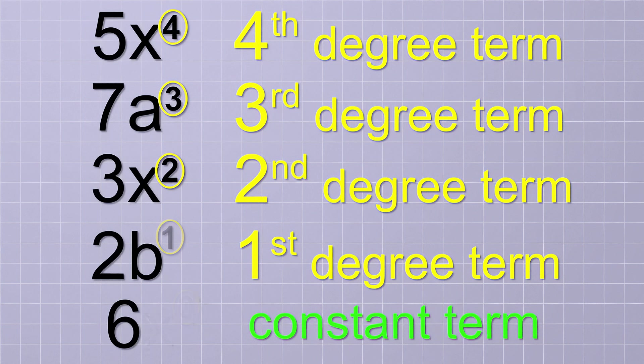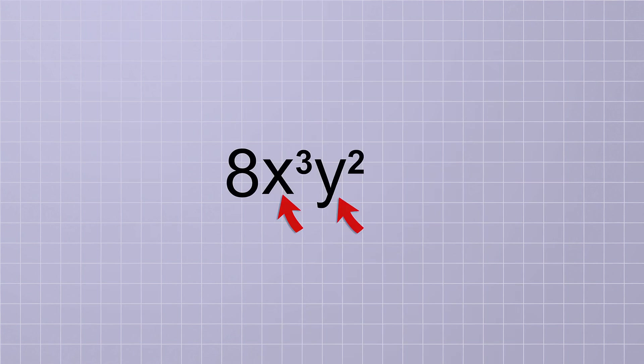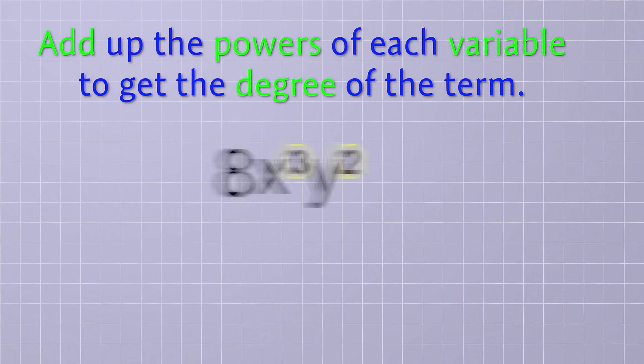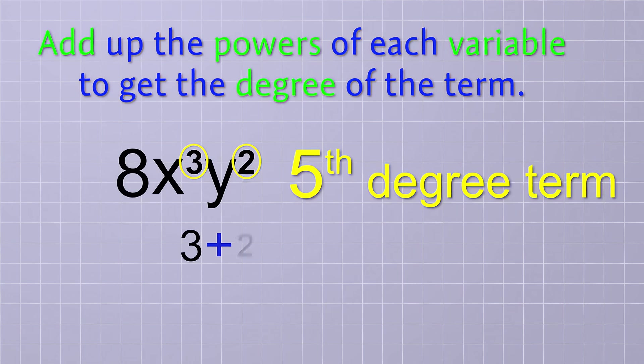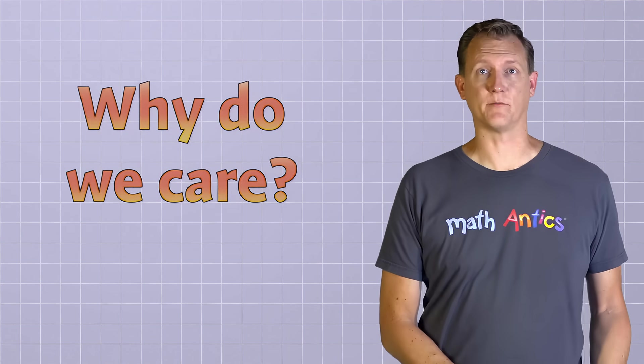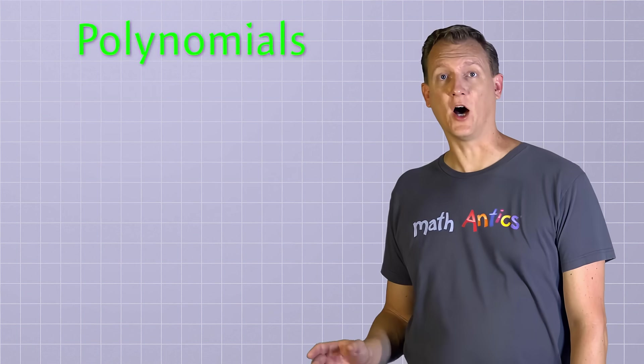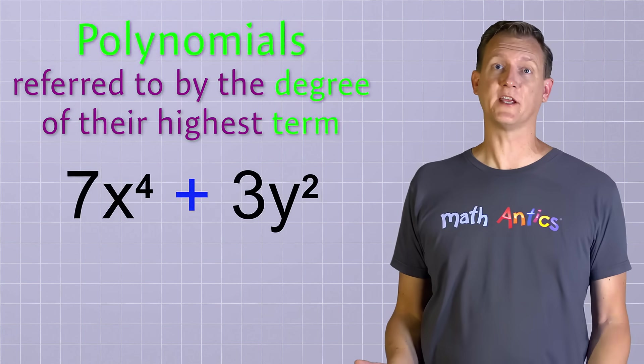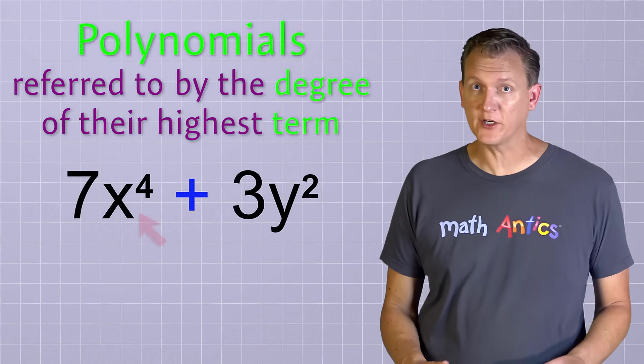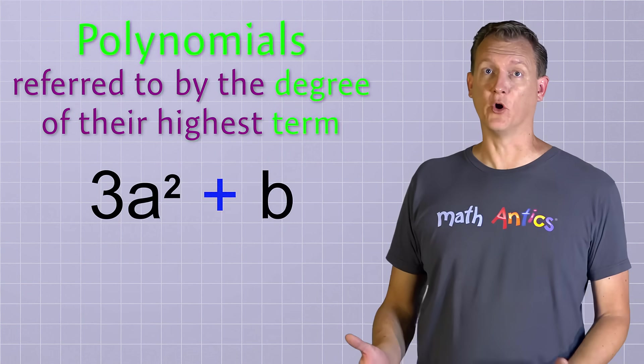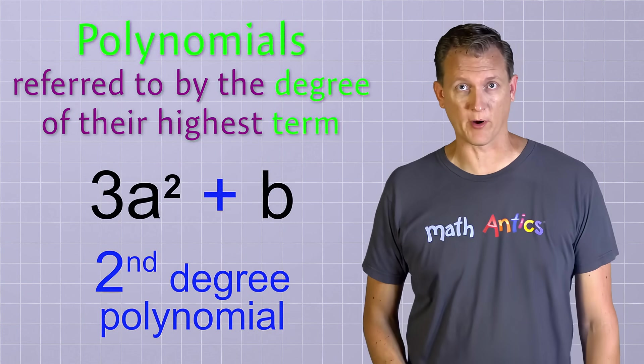Things are a little more complicated when you have terms with more than one variable. In that case, you add up the powers of each variable to get the degree of the term. Since the powers in this term are 3 and 2, it's a 5th degree term because 3 plus 2 equals 5. Ok, but why do we care about the degree of terms? Well, it's because polynomials are often referred to by the degree of their highest term. If a polynomial contains a 4th degree term, but no higher terms, then it's called a 4th degree polynomial. But if its highest term is only a 2nd degree term, then it's called a 2nd degree polynomial.